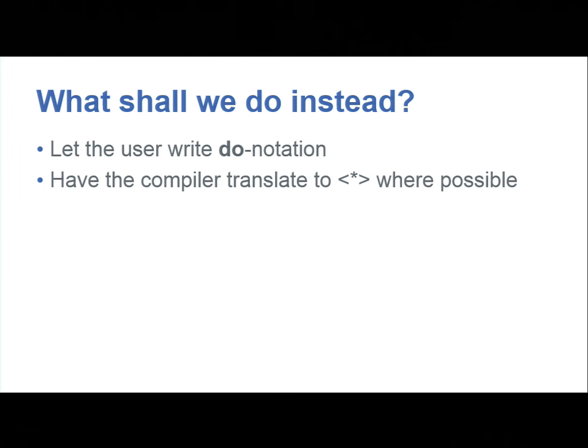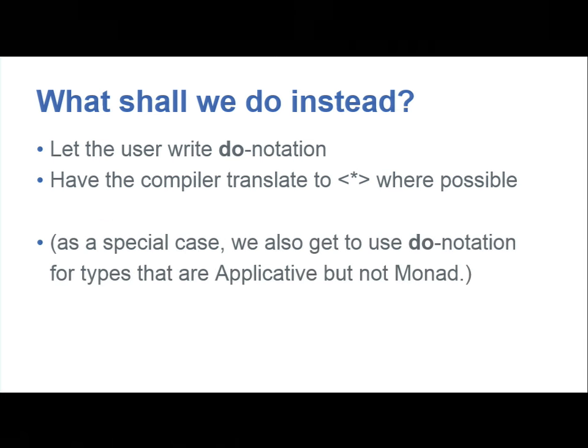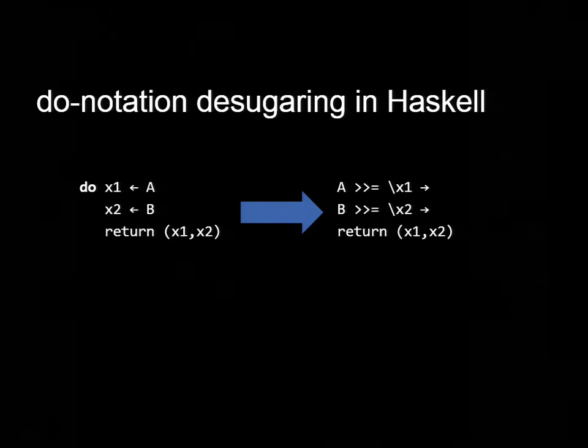So what are we going to do instead? We'll let the user write do notation only, and we'll have the compiler translate to applicatives where possible. There's a nice side effect of doing this. What we're going to get is the use of do notation for types that are applicative but not monad. Because applicative is a weaker abstraction, there are more types that are applicative than there are monad.